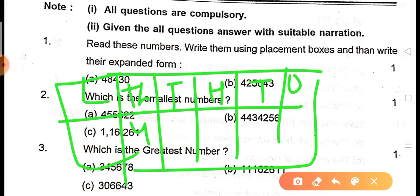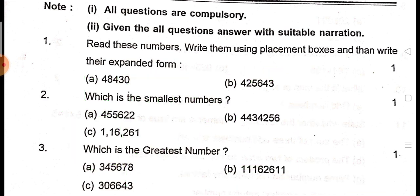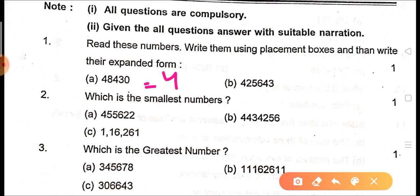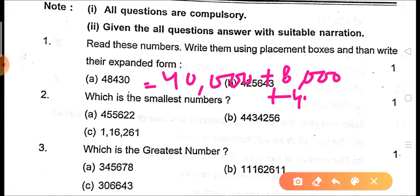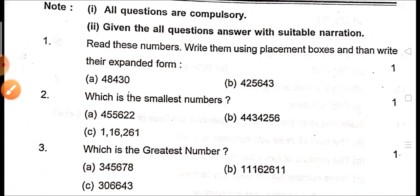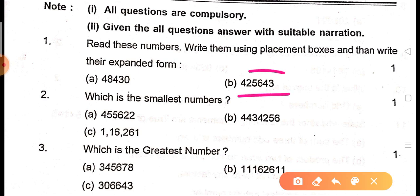Suppose you write 48,000. You place the digits in the placement box, then write it in expanded form: 40,000 + 8,000 + 400 + 30. The next number is 4,25,643 — its expanded form is what you will tell me in the comment section.